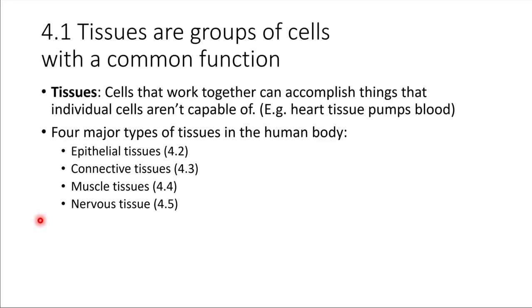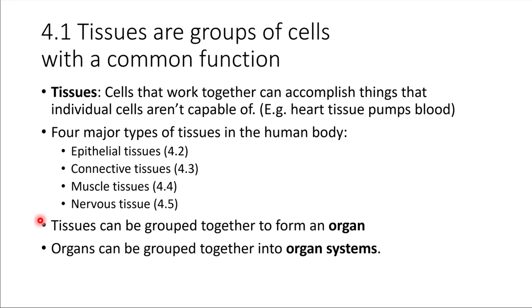Once we learn about the tissue types, we're going to see how tissues can work together to give us organs, and then organs can work together to form organ systems. Ultimately there are eleven organ systems that make up the human body.